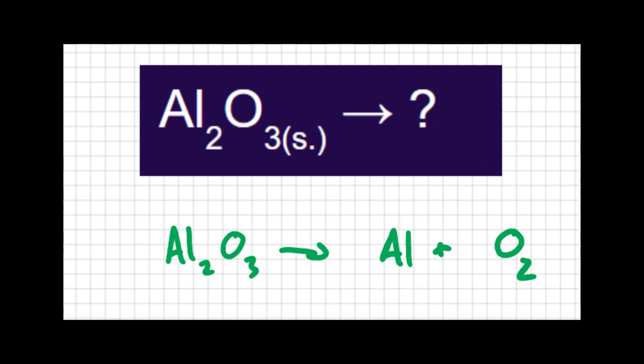I have three oxygens here and two oxygens here. I can balance them with a fraction, or I can make a total of six oxygens. If I put a three here, and I put a two here, that balances out my oxygens. Then I can finish by balancing my aluminums and putting a four right here.